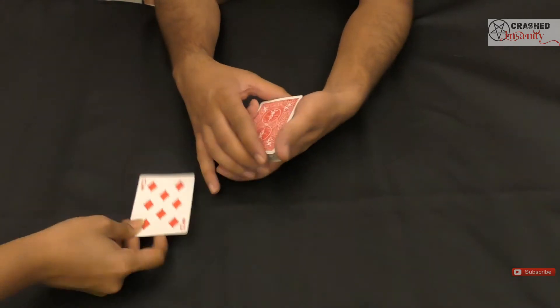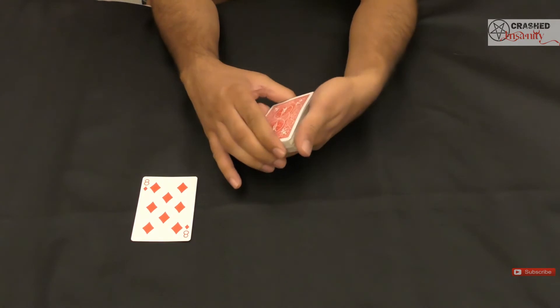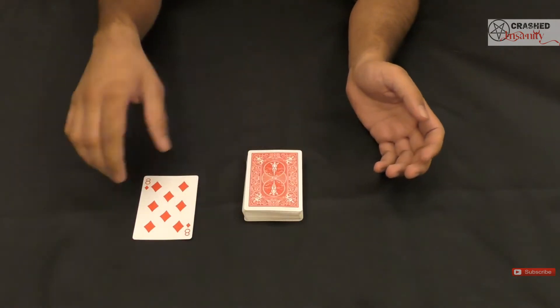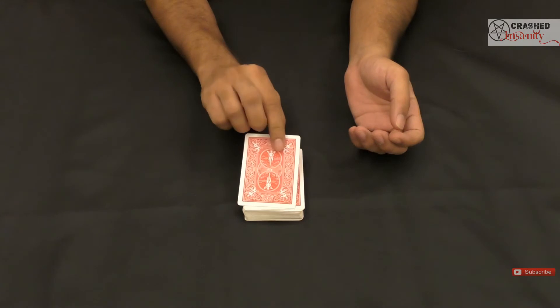The card that they have chosen is the eight of diamonds. So what we'll ask them to do is first place the card on top of the deck.